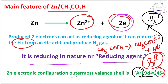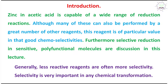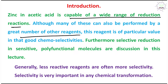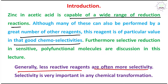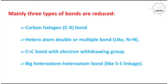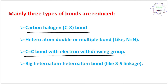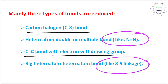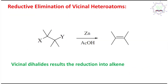This reagent is important because it is capable of a wide range of reduction reactions. Although similar reactions can be performed by many other reagents, this one is chosen due to its mildness and proper selectivity. Remember: less reactive reagents are often more selective, making them very important in chemical transformations. We will examine three main types of reactions: carbon–halogen bonds, carbon–carbon multiple bonds bearing electron-withdrawing groups, and heteroatom–heteroatom bonds.